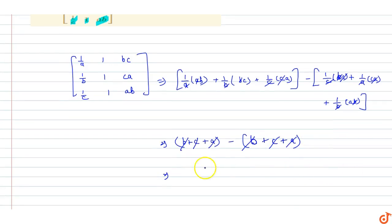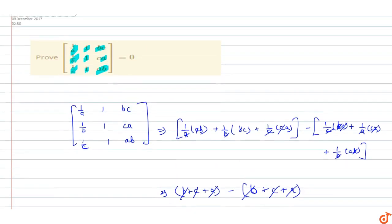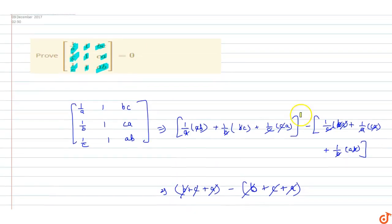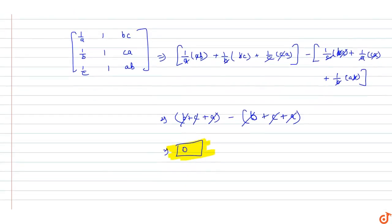This simplifies to plus b minus b, plus c minus c, and plus a minus a, all of which cancel out. So this equals 0. Therefore, the value of the determinant of the matrix with elements 1/a, b, c; 1/b, c, a; 1/c, a, b equals 0. This completes our proof.